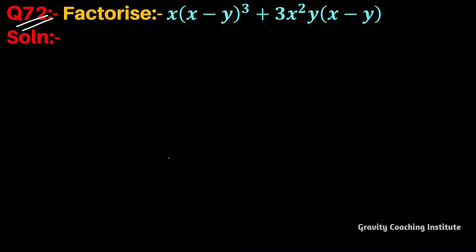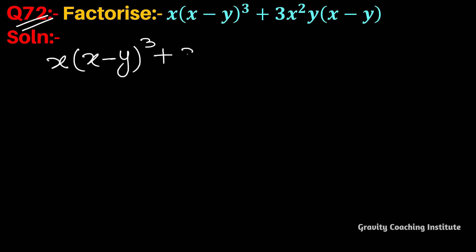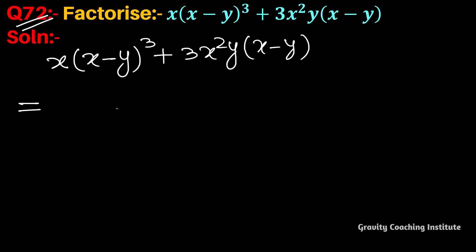Question number 72: factorize x into (x minus y) whole cube plus 3x squared y into (x minus y). So here the expression is x(x minus y)³ plus 3x²y(x minus y).